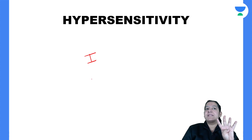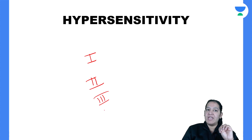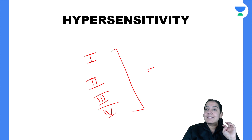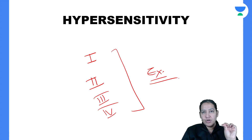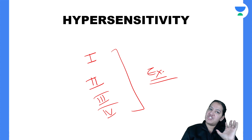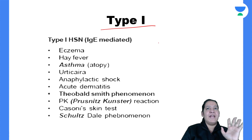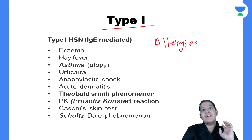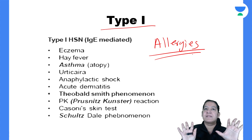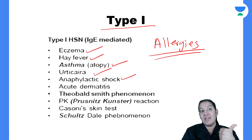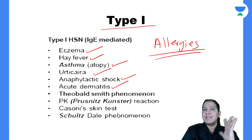We know there are four types of hypersensitivity: type 1, type 2, type 3, and type 4. Maximum MCQs come on the examples of these hypersensitivity types. Type 1 hypersensitivity is simply all allergies. Whatever type of allergies — hay fever, eczema, asthma, urticaria, anaphylactic shock, acute dermatitis — these are all type 1 hypersensitivity. Anaphylactic shock is the most severe allergy in which the larynx is involved and respiratory distress occurs.